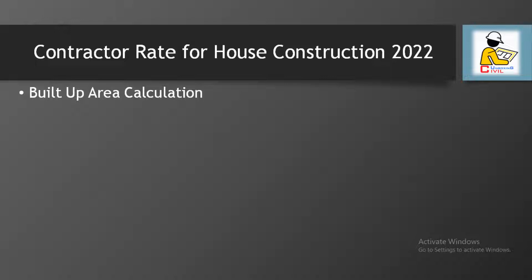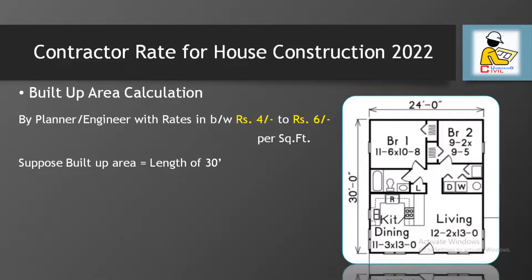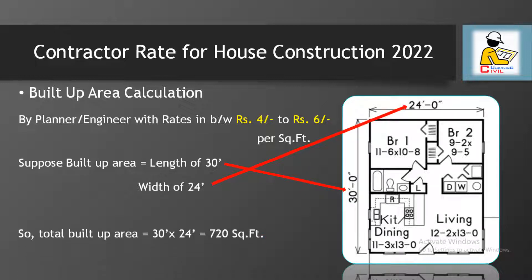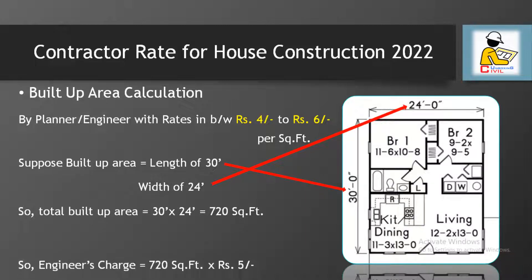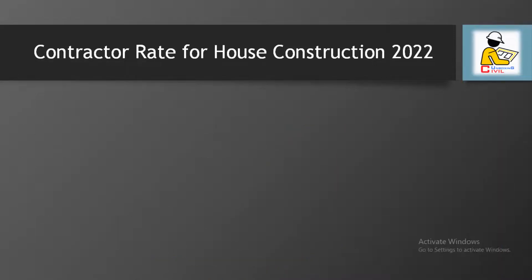To know about house construction rate in 2022, first we have to calculate the built-up area. For perfect planning you must prepare a plan by an engineer. The engineer will charge standard rates of rupees 4 to 6 per square feet. Suppose you have a plot with a length of 30 feet and width of 24 feet — built-up area comes to 720 square feet, or one katha land. The engineer's charge at rupees 5 per square feet comes to about rupees 3,600.